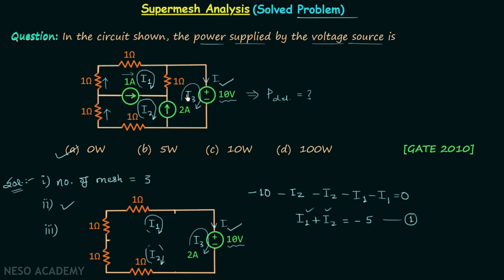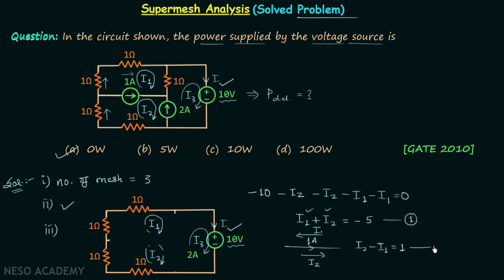To get more equations we focus on the branches containing the current sources. The first current source provides 1 ampere in this branch. Current I1 flows in the opposite direction to this 1 ampere, while I2 flows in the same direction. Since I2 is the larger current, the net current of 1 ampere gives us I2 minus I1 equals 1. This is Equation 2.